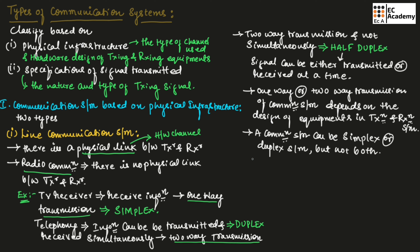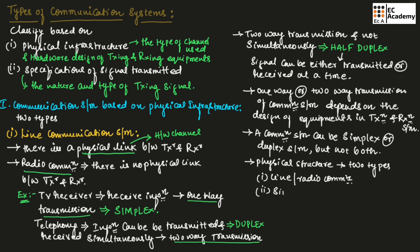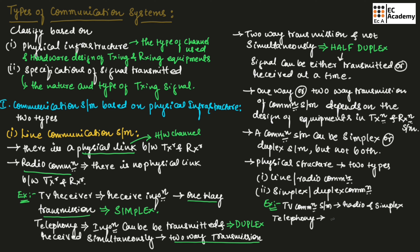Based on physical structure, there are two types of communication systems: first, line or radio communication; and second, simplex or duplex communication. For example, a TV communication system is a combination of radio and simplex communication, while a line telephony system is a combination of duplex and line communication.